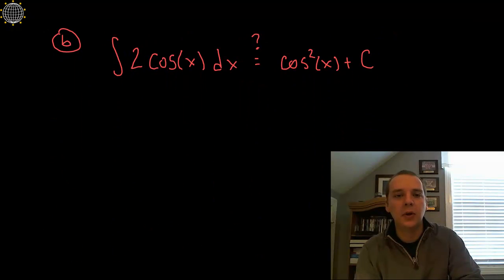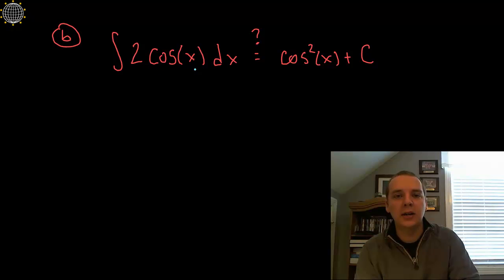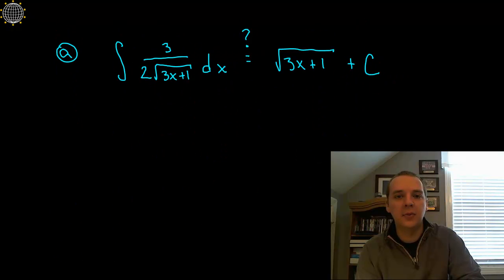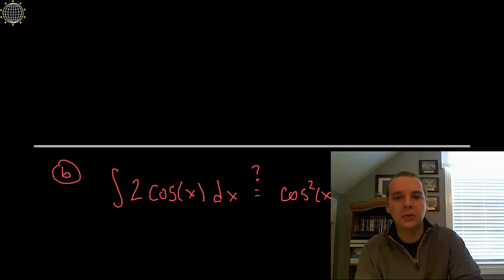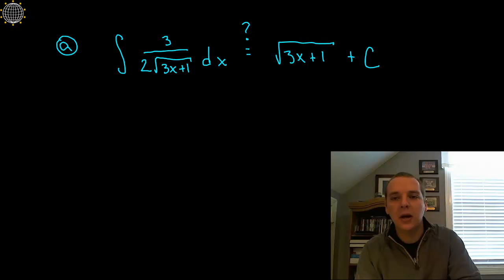Then I also did another example where I integrated 2 cosine x dx as cosine squared x plus C. Now one of these is incorrect, but I'm not going to mention which one. I want to see which one of these is the right answer and which one is the wrong answer here. So what I'm going to do is take each of these guys and differentiate them and see which one was right and which one was wrong.